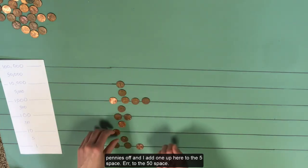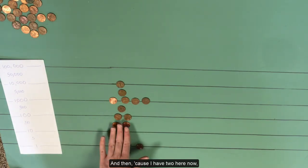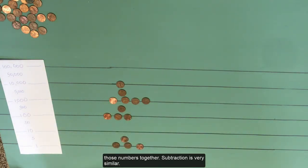I just take my pennies off and I add one up here to the five space, to the 50 space. And then, because I have two here now, I just pop that up to the 100 and we're good. We've just added those numbers together.